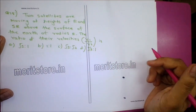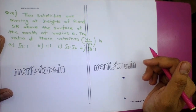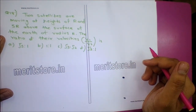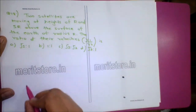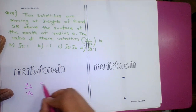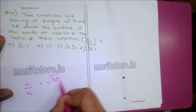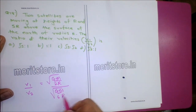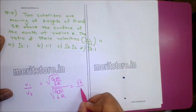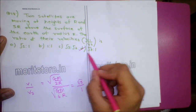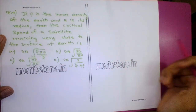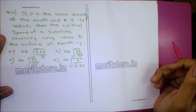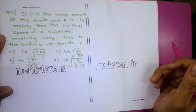Question 18: Two satellites are moving at heights R and 5R above the surface of the Earth of radius R. The ratio of their velocities: V1/V2 = √(GM/2R) ÷ √(GM/6R) = √(6R/2R) = √3/1. Option D, √3:1, is the correct answer.